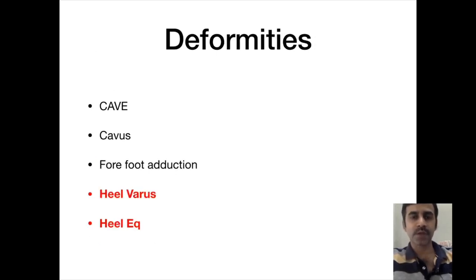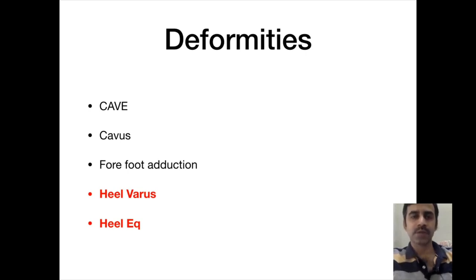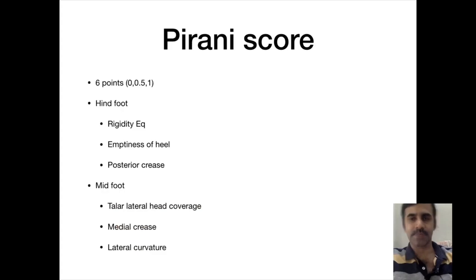The deformities are cavus, forefoot adduction, heel varus, and heel equinus. We have to remember the deformities in this order — that is CAVE: C is cavus, A means adduction, V is varus, E is equinus. This has to be remembered in this particular order because of a very important reason which we will discuss later.